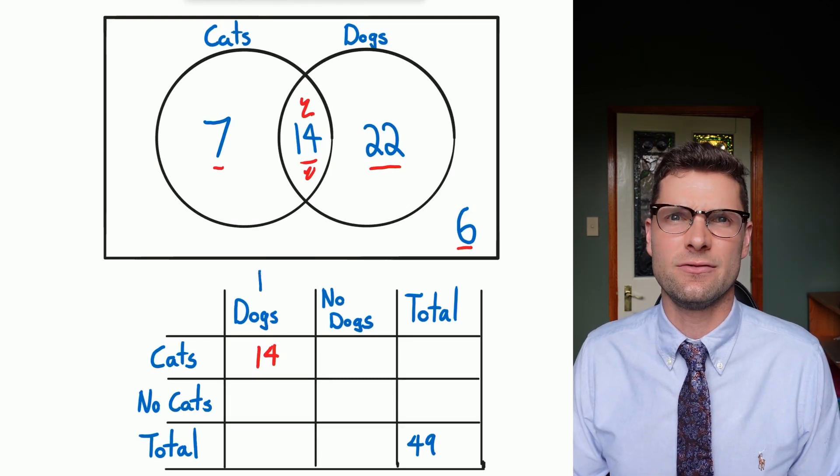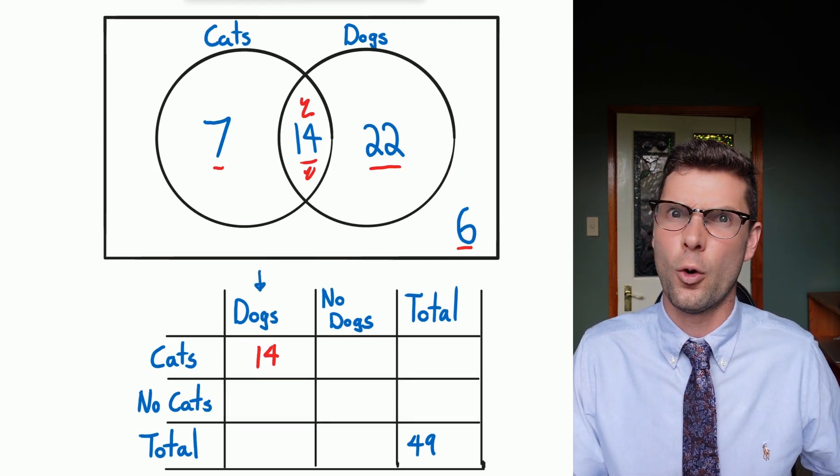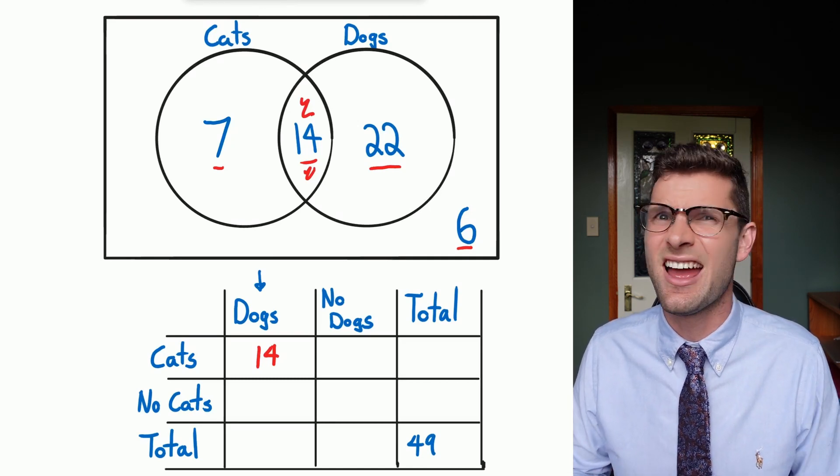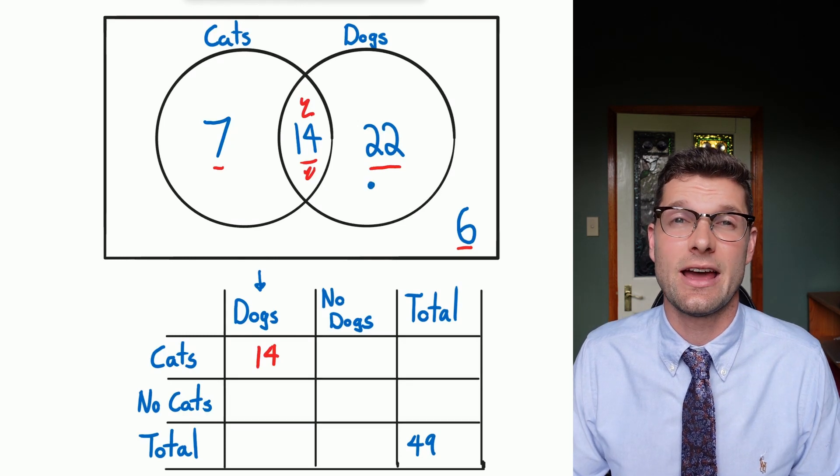And then I'm going to finish off how many people have dogs. Because 14 people have both and 22 people only have a dog, I'm just going to throw that 22 directly underneath.